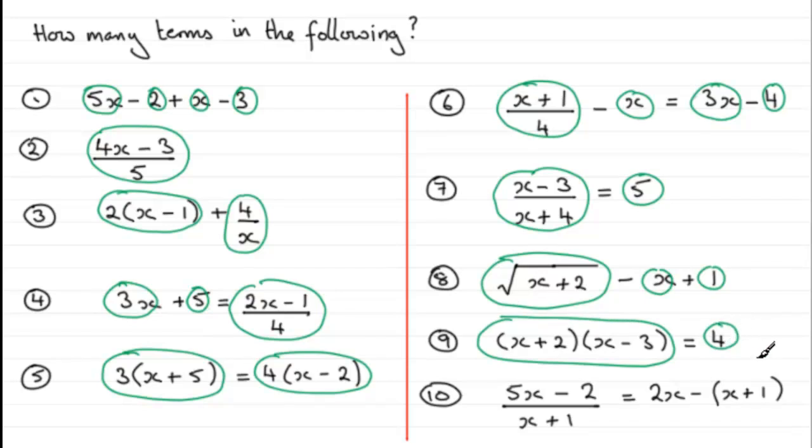And finally, in number ten, the division acts as wrapping that all up as one term, and then we've got here two terms: we've got the 2x and then we've got the (x + 1).